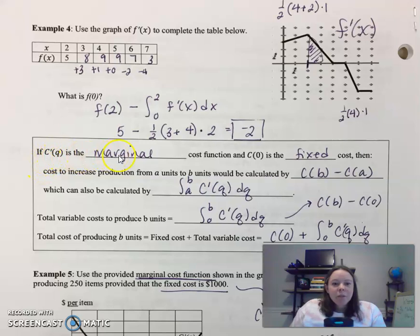So if c prime of q is the marginal cost function and c of zero is the fixed cost, then the cost to increase production from a to b units would be calculated by c of b minus c of a. Make sense? Which can also be calculated. So here's your calculus.